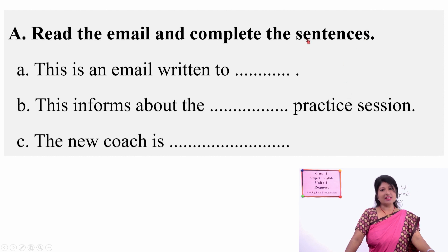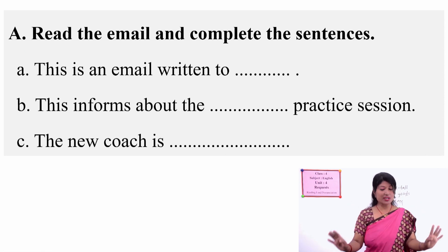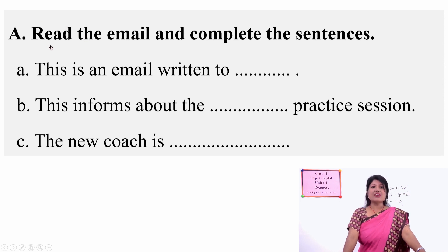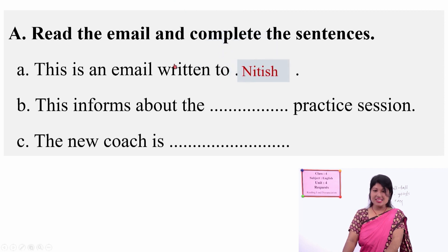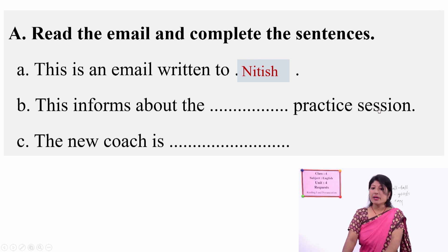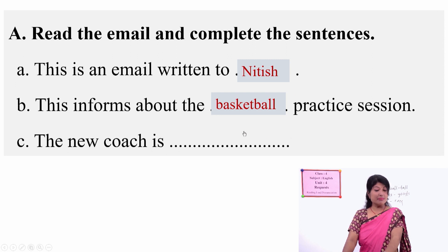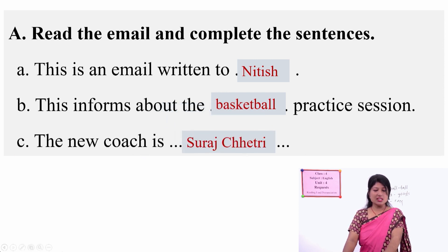After typing the email you can click Send, and the email will be sent. You can also attach a file. Now it's time for exercises based on the email we read. Read the email and complete the sentences. A: This is an email written to — who is the receiver? Nitis — Nitis is the receiver. B: This informs about the — basketball practice session. C: The new coach is — Suraj Chetri.